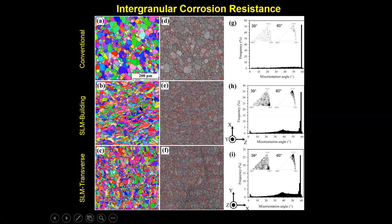The reason behind this intergranular corrosion resistance relates to the grain morphology and grain boundary character of the material. EBSD maps show that the additively manufactured material, in both building plate and transverse planes, has smaller grains compared to the conventional one, and also a high density of twin boundaries and low energy grain boundaries. Because the additively manufactured sample has a high density of low energy grain boundaries, and these types of grain boundaries are not susceptible to intergranular corrosion, the additively manufactured sample has very high resistance to intergranular corrosion.